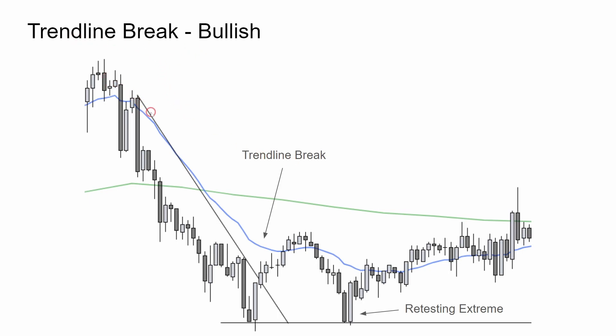Here we have a bear channel. At the end we have an outside bar. Strong trend line break and it breaks above the EMA. It comes back for a retest and then we have a bull channel for the rest of the day.